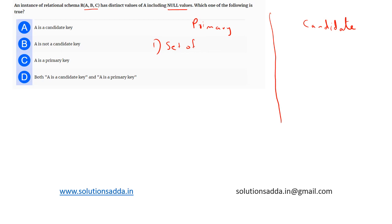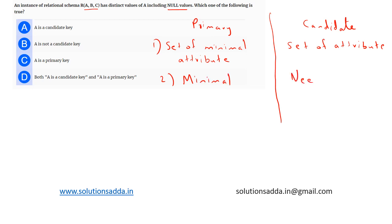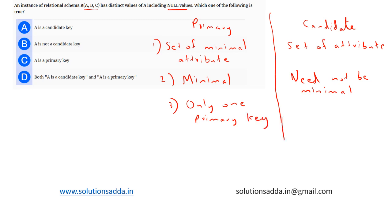...specifically a minimal set of attributes to uniquely identify a tuple in a relation. A candidate key is a set of attributes that need not be minimal. Since the primary key is minimal, there can be only one primary key, whereas a candidate key can be more than one.